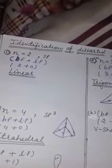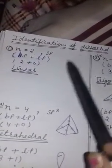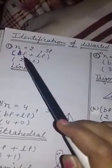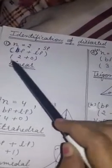In my previous video, I talked about how to get the value of N. If N is equal to 2, then hybridization will be SP. Here, if bond pairs are 2 and lone pairs are 0, then the shape will be linear.